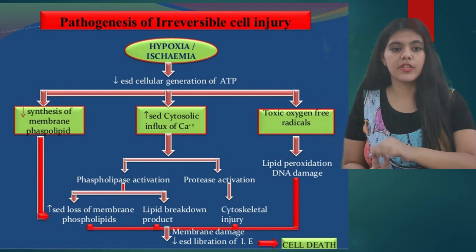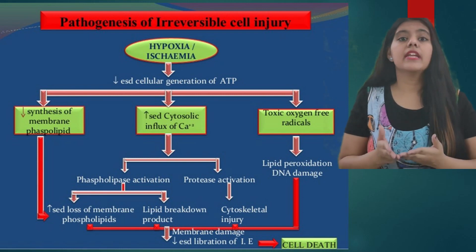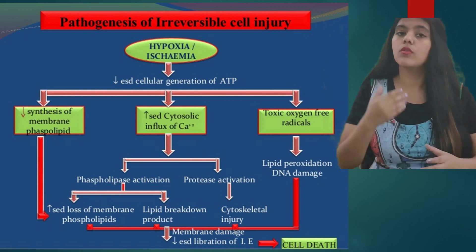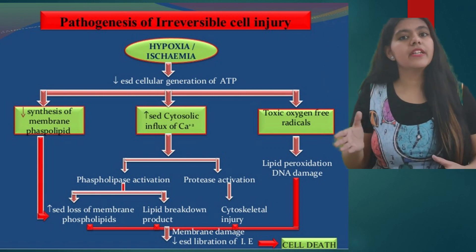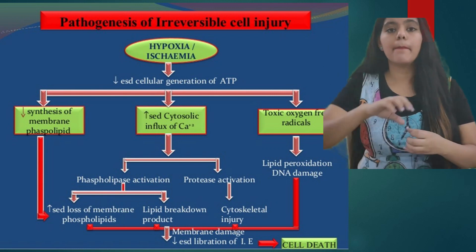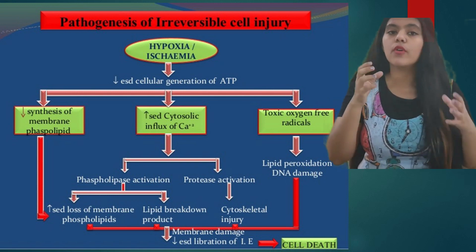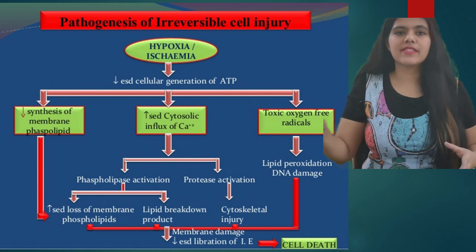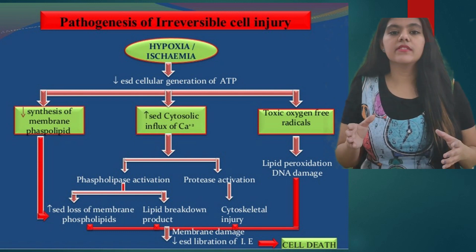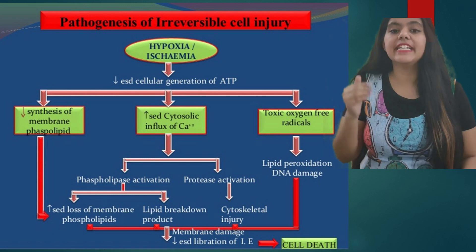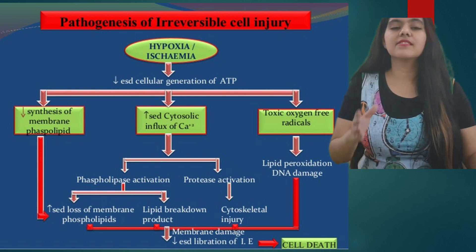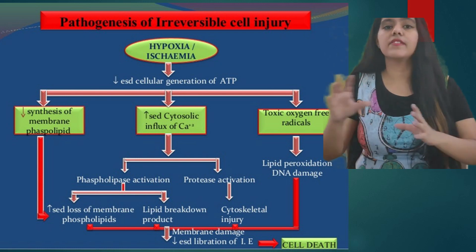As seen in the chart, protease activation and phospholipase activation occur. The cell membrane — the plasma membrane — is made from phospholipids, and phospholipid synthesis suffers continuous loss. Lipid breakdown occurs through activated enzymes. Protease activation leads to cytoskeletal injury, which causes release of lysosomal enzymes. Additionally, toxic oxygen free radicals result in lipid peroxidation and DNA damage. Lipid peroxidation — breakdown of lipid-based cellular products into smaller parts — also leads to release of lysosomal enzymes and resulting cell death.